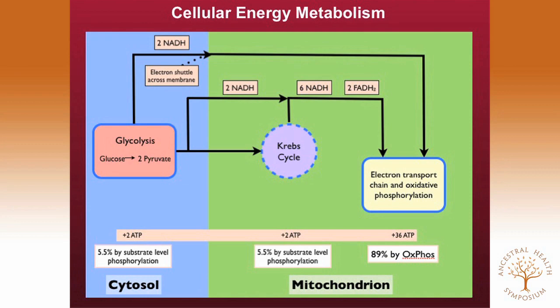When we look at the mitochondria of tumor cells, this is a normal electron micrograph showing the cristae, which contain the proteins of the electron transport chain that generate most of the energy in our bodies. But this is a mitochondrion from a glioblastoma multiforme — you can see it's devoid of cristae. We never find completely normal mitochondria in any tumor cell. There's no way these tumor cells can produce energy through oxidative phosphorylation without the structures needed to do so.